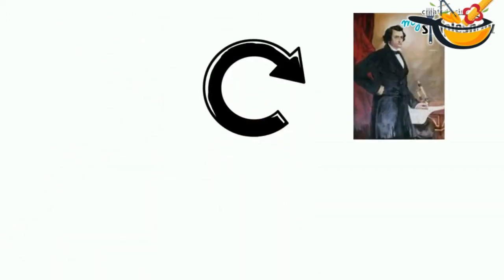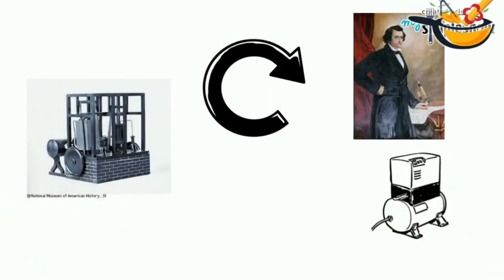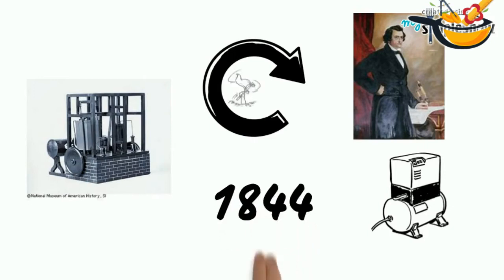With continuing trials, John Gorey, the American physician, used compressed air to create a refrigeration model for a tropical home in 1844. With failure again.